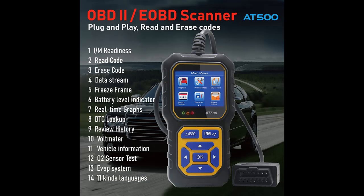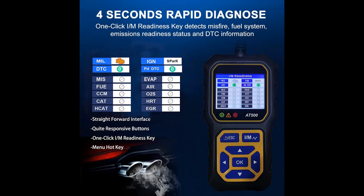Features highlighted in this overview include charging functions, voltmeter function, and battery level indicator. It also features a cranking system test that analyzes the state of the cranking system, displaying the cranking voltage and the cranking time.